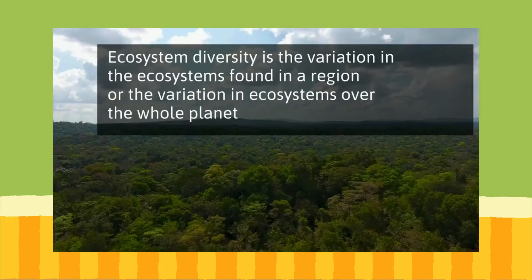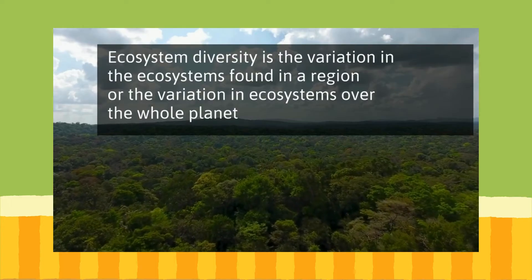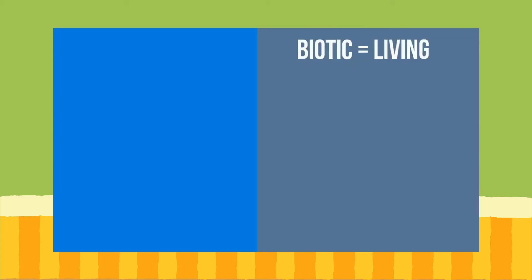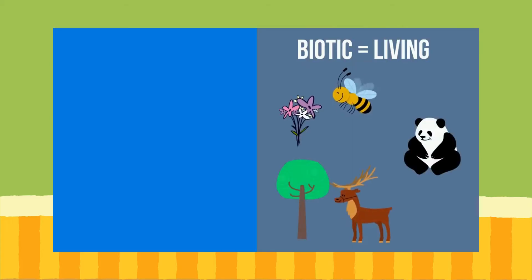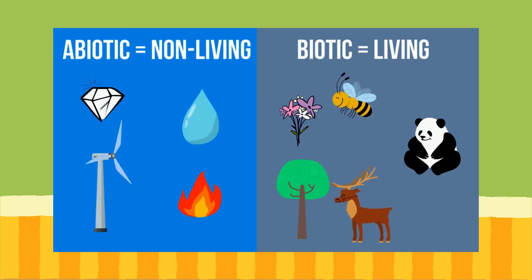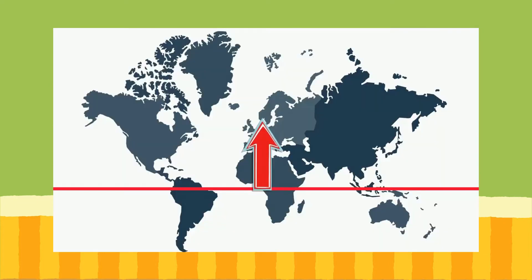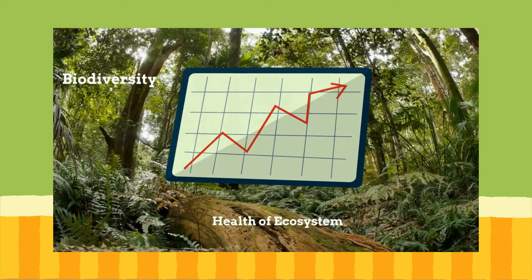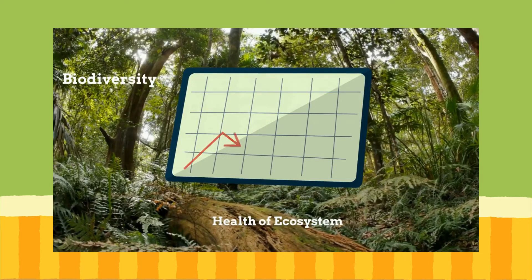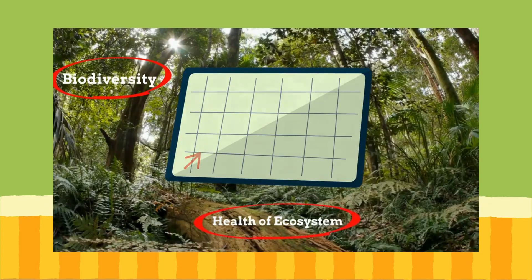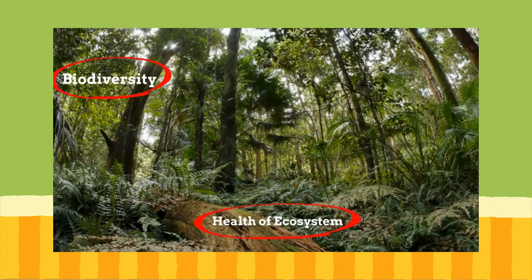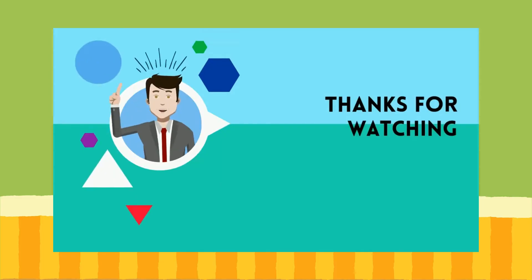Ecosystem diversity is the variation in the ecosystems found in a region or the variation in the ecosystems over the whole planet. It is a measure of the variety of biotic or living factors and non-living or abiotic factors present in an ecosystem. Rainforests usually have a high ecosystem diversity, and deserts and polar regions usually have a low ecosystem diversity. In general terms, biodiversity is greater at the equator and decreases as you move away from the equator. In summary, as the variety of life goes up in an ecosystem, biodiversity increases, and the health of the ecosystem also goes up.